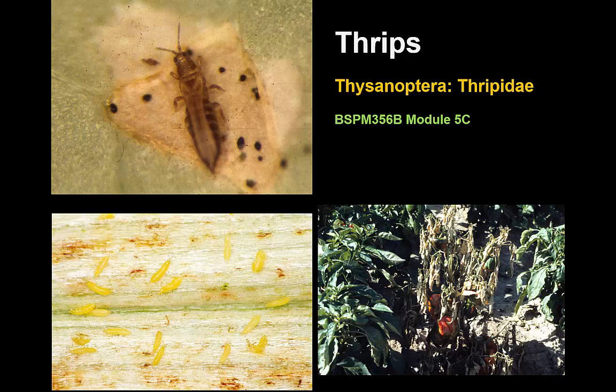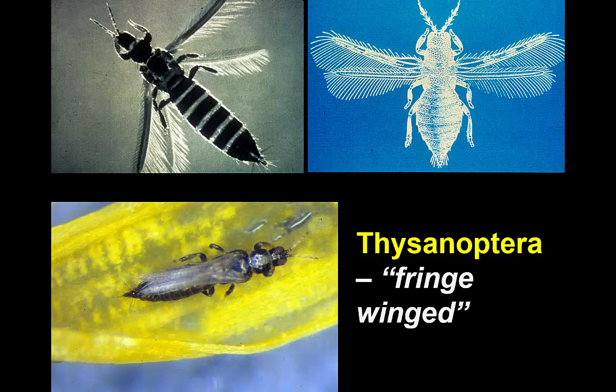The thrips are in their own order, the order Thysanoptera, which means fringe-winged, because they have a unique wing with a central core with fringing on the outside. Rarely will you see the wings displayed like this, and since they're very small in size, you're not going to see the insect very well in any case, much less the wings.